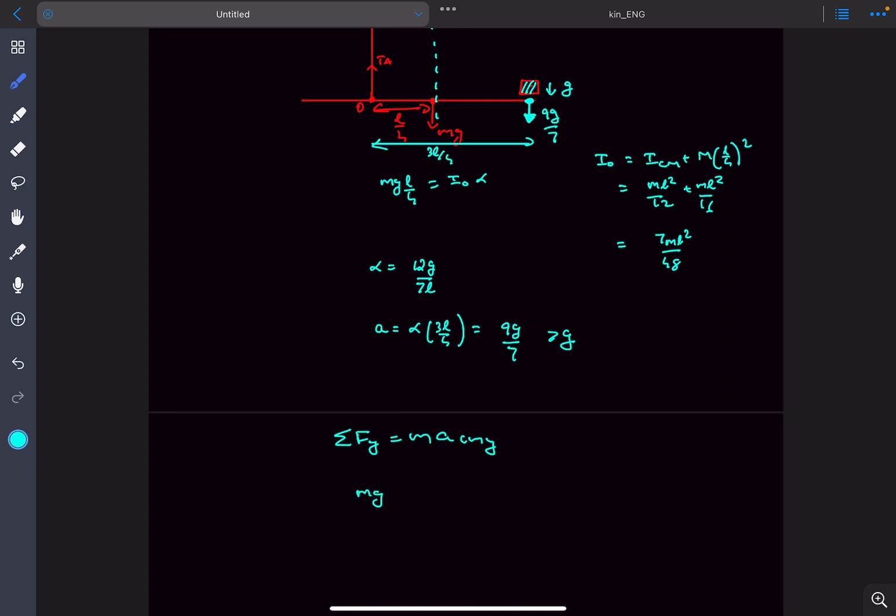We can write Mg minus tension T_A equals M times acceleration of center of mass, and acceleration of center of mass is going to be alpha times L by 4, which will come out to be 3g by 7.